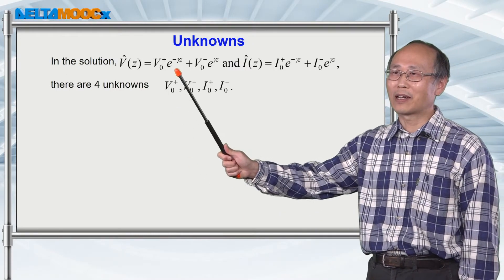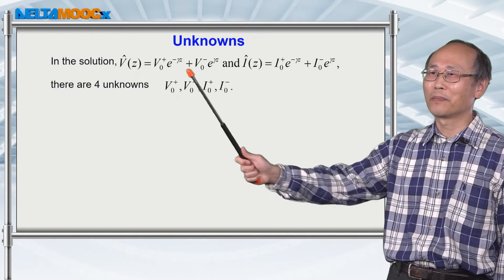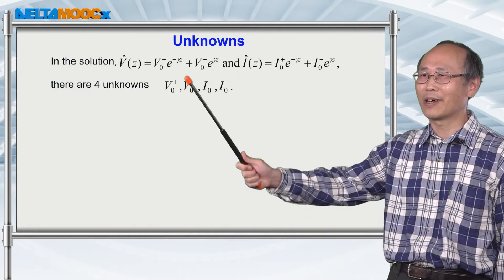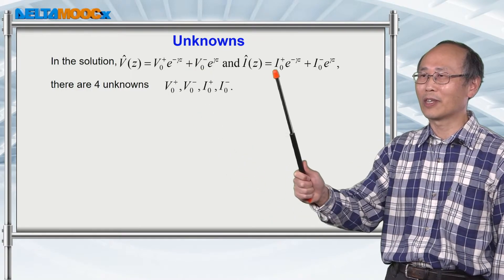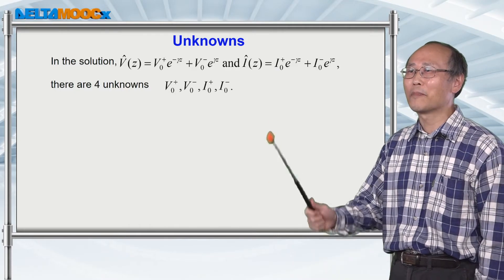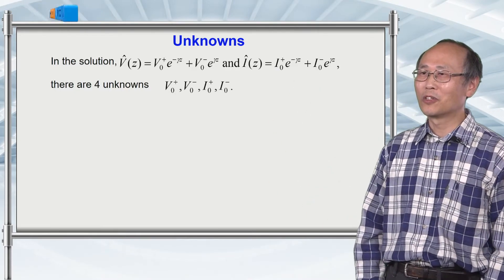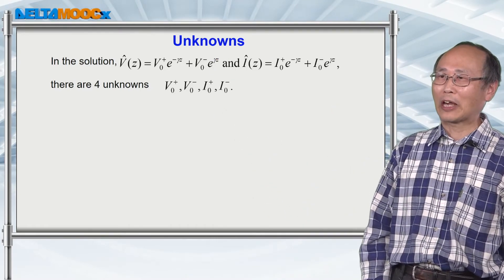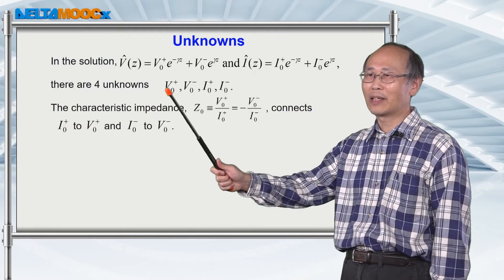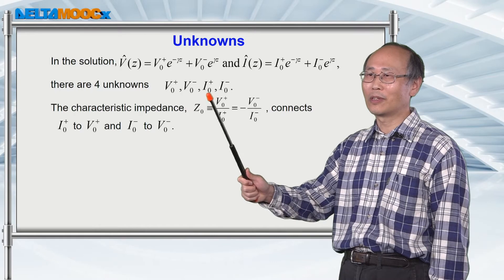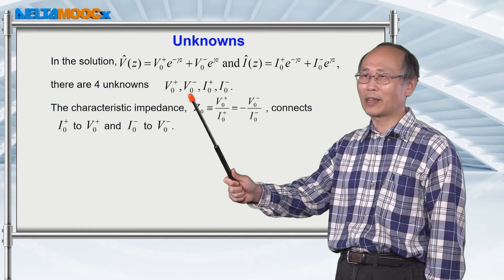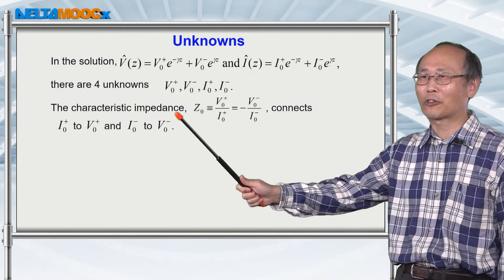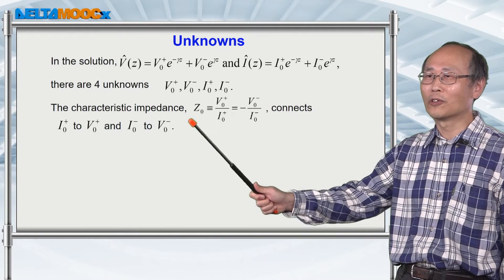Looking back at the general solutions for the voltage and current, in general we do not know the forward component of the voltage, the backward component of voltage, the forward component of the current, and the backward component of the current. So we have four unknowns in these two expressions. With the definition of the characteristic impedance, we can connect the forward voltage to the forward current and also connect the backward voltage to the backward current. So the definition of characteristic impedance reduces the four unknowns into just two.